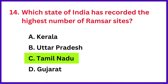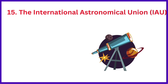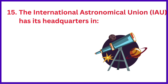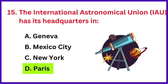The correct answer is option C: Tamil Nadu. The International Astronomical Union has its headquarters in which city? The correct answer is option D: Paris, France.